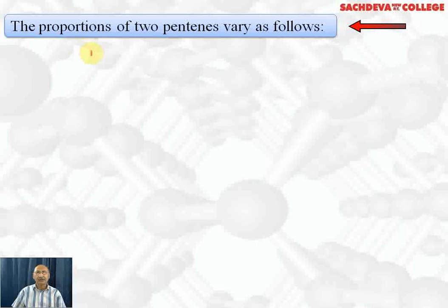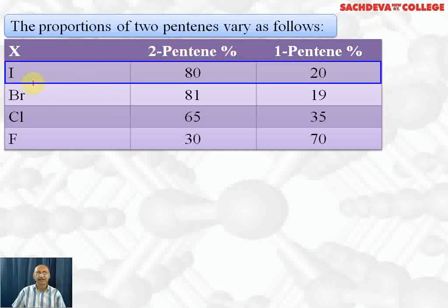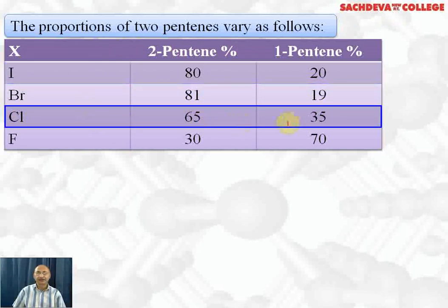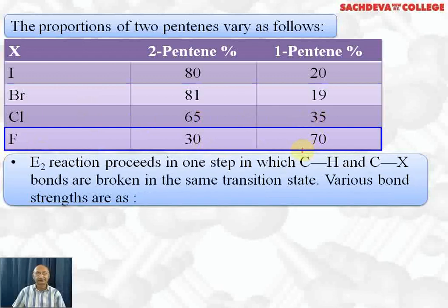The proportions of the two pentene products vary with the halide used. With iodopentane: 80% 2-pentene and 20% 1-pentene. With bromide: 81% and 19%. With chloride: 65% and 35%. With fluoride, the proportions become opposite — 2-pentene becomes the minor product and 1-pentene becomes the major product.